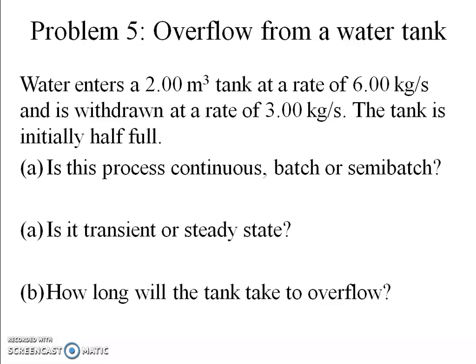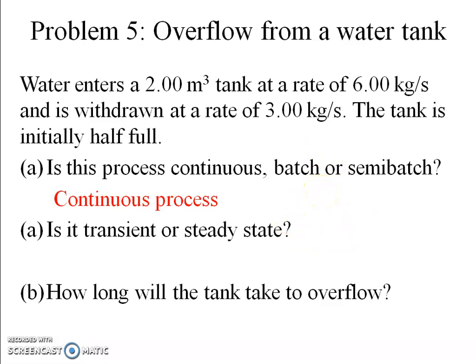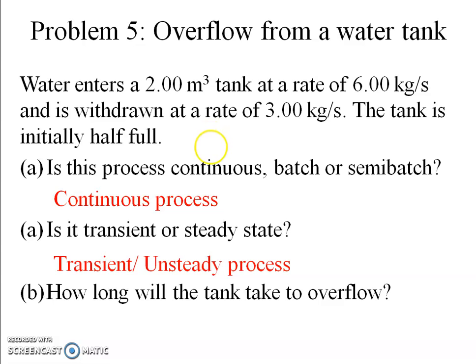First, is this process continuous, batch, or semi-batch? Since material is crossing the system boundary, it is not batch. It is also not semi-batch because one stream enters and one leaves. This is a continuous process. Now, is it steady state or unsteady state? Since 6 kg/s enters but only 3 kg/s leaves, water accumulates in the tank, meaning something is changing with time — this is a transient or unsteady state problem.